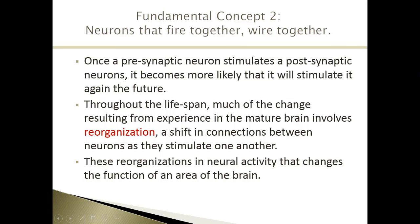The second fundamental concept is that neurons that fire together wire together. The process of a neuron releasing neurotransmitter and stimulating another neuron increases the likelihood that that sequence of events will happen again. This is primarily what happens with neural development across the lifespan — also called neural reorganization — where neurons stimulate each other based on something you're doing in your environment, forming or breaking connections.